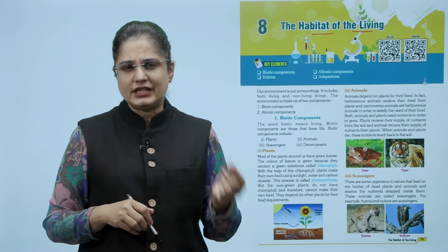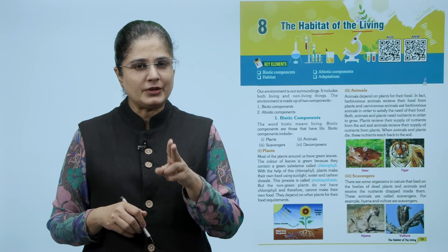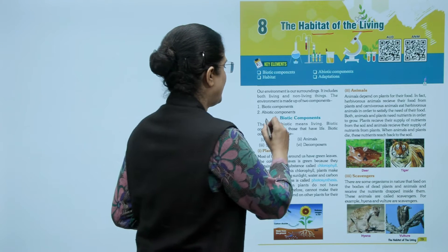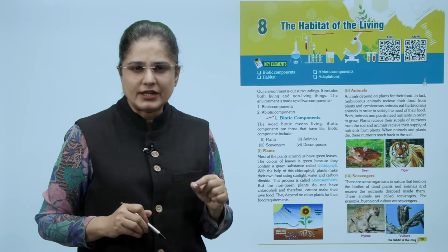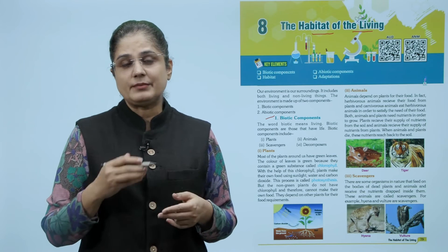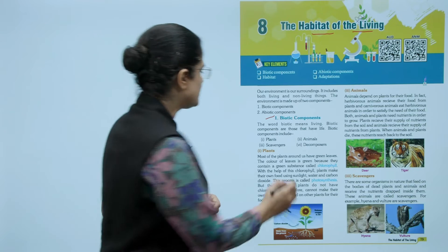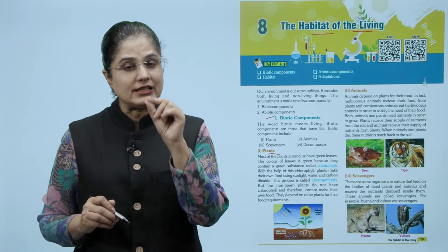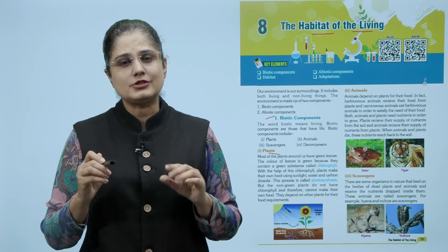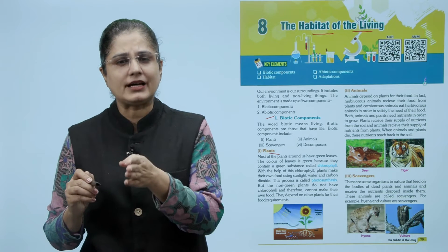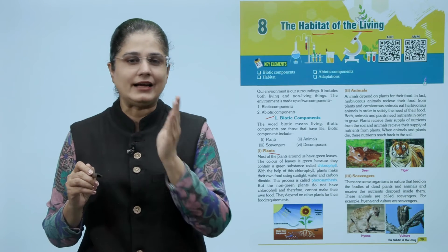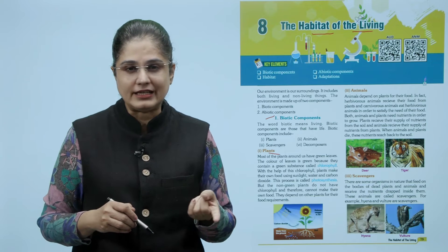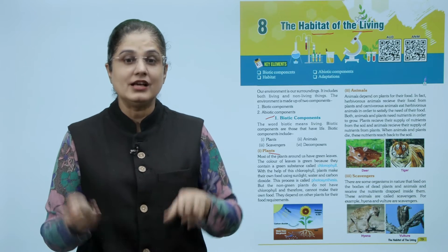Our environment is our surroundings - it includes both living and non-living components. The two components that the environment is made up of are biotic components and abiotic components. The word biotic means all the living things, which include plants, animals, scavengers, and decomposers. Most plants around us have green leaves - this green color is due to chlorophyll. In the presence of sunlight, water, and carbon dioxide, chlorophyll produces food, oxygen, and energy through photosynthesis. Non-green plants lack chlorophyll and cannot make their own food, so they depend on other plants.